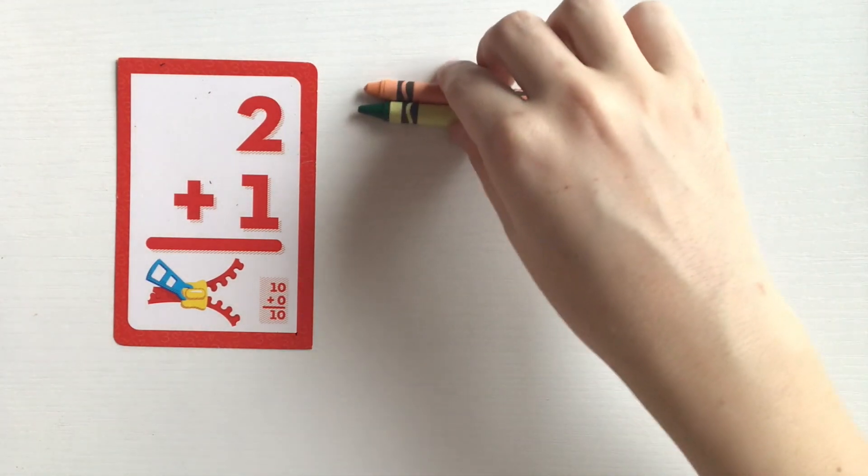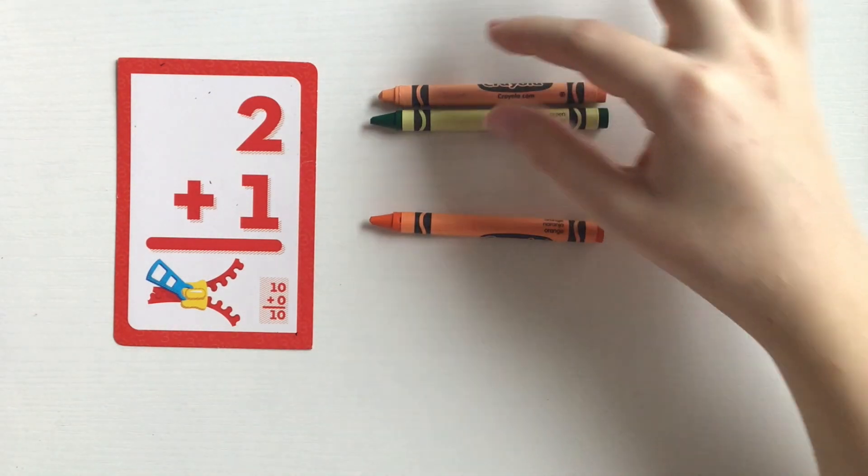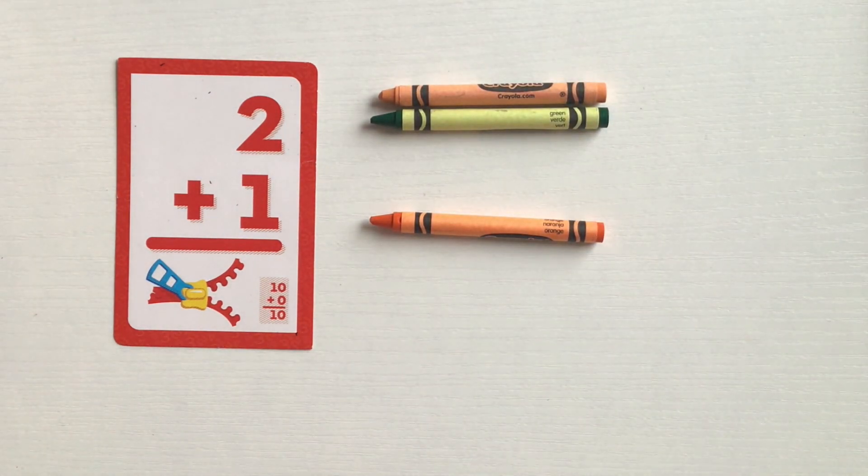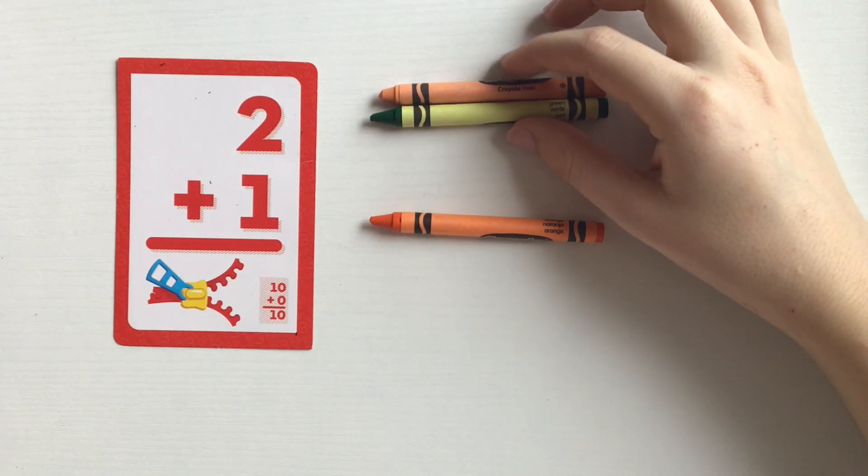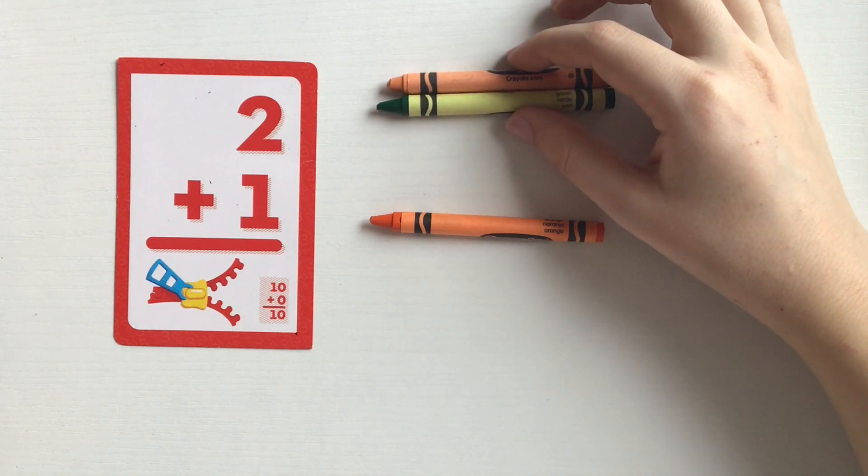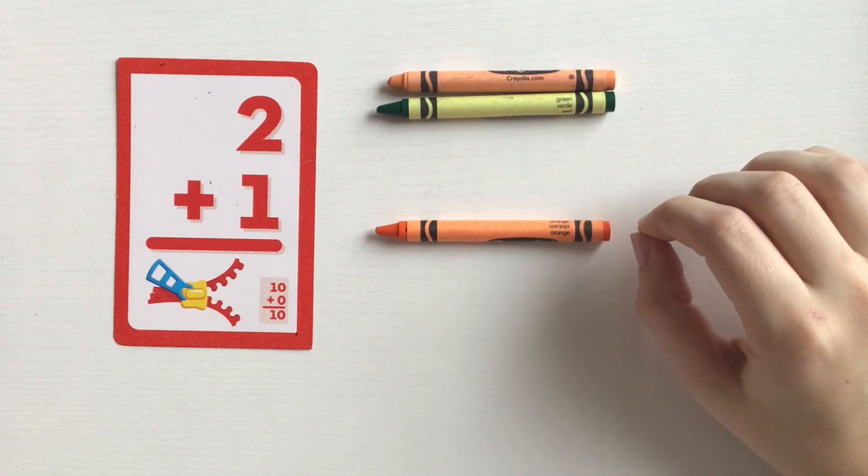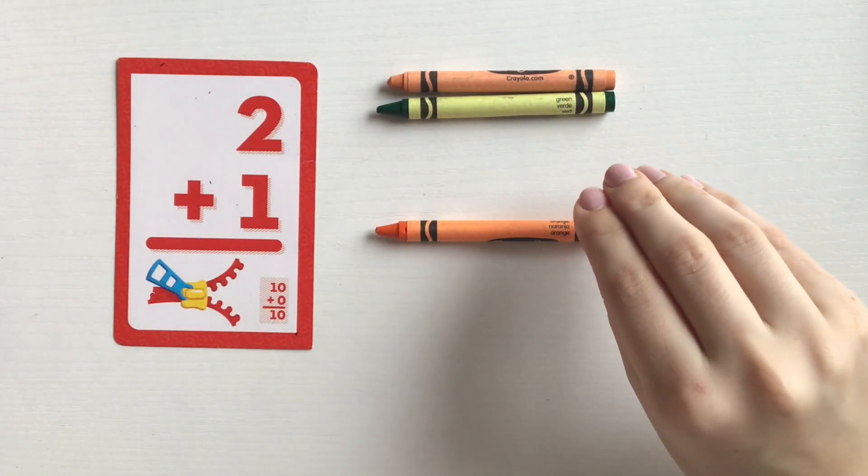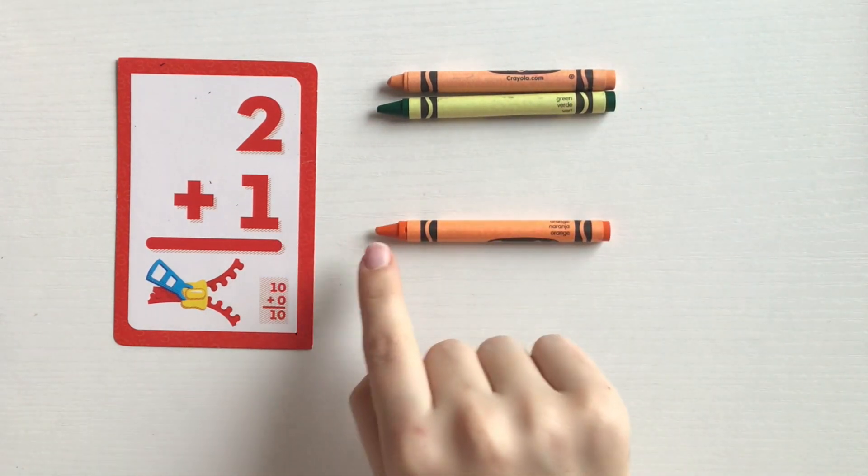that two crayons plus one crayon equals how many? So for example, if I said Ben has two crayons, Jane has one crayon, how many do they have all together? We would know that we're solving two plus one.